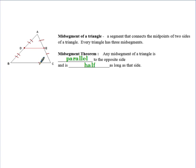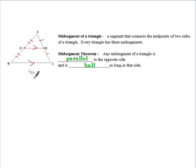The mid-segment theorem states that any mid-segment of a triangle is parallel to the opposite side and is half as long as that side. So looking at our figure, DE is parallel to BC. We can use corresponding angles with those parallel lines, and the length of DE is half the length of BC — so if BC is 10, then DE is 5.